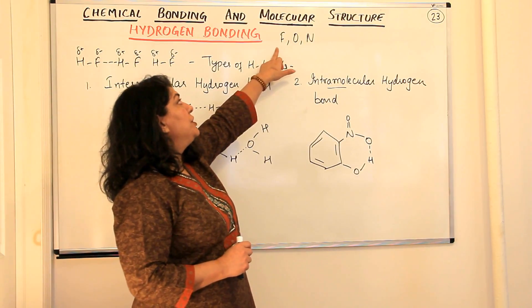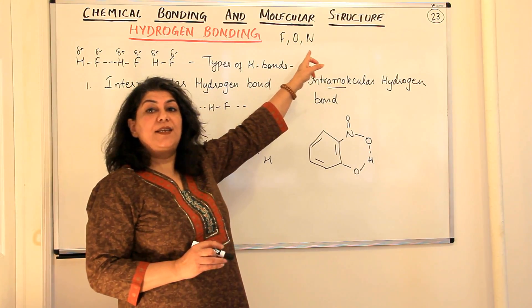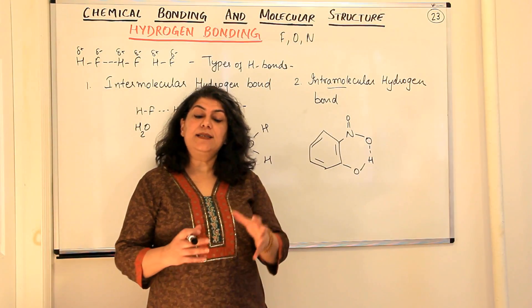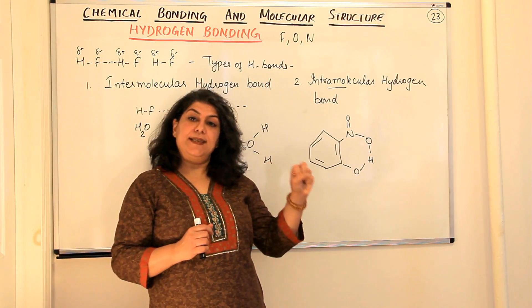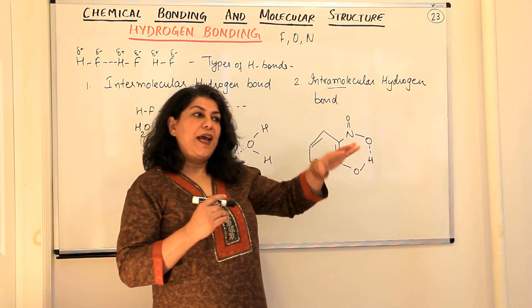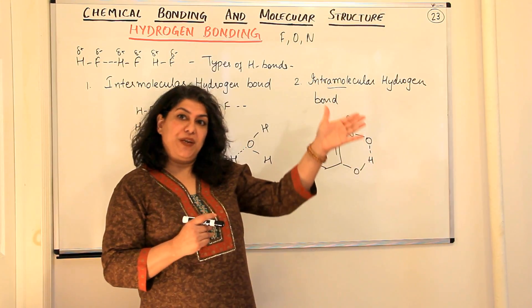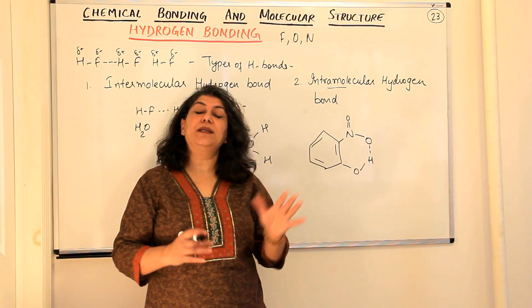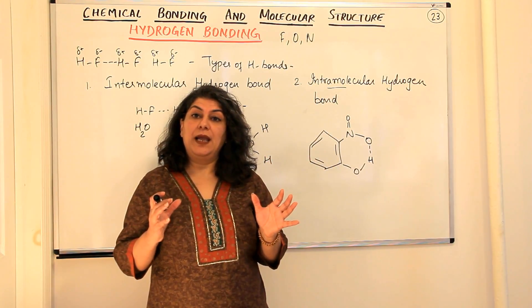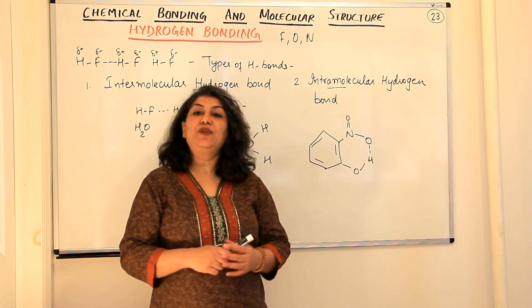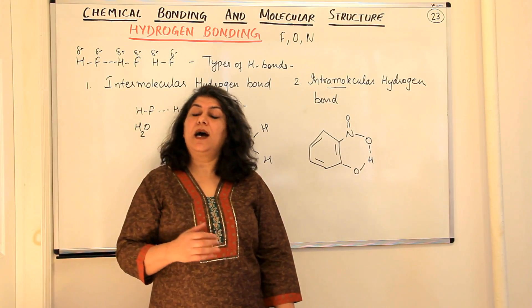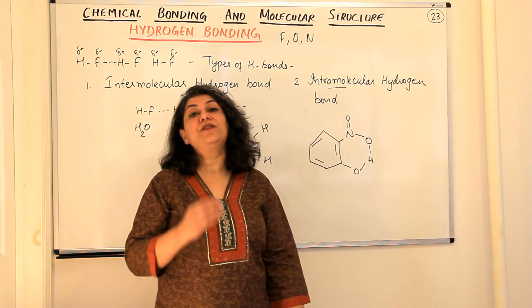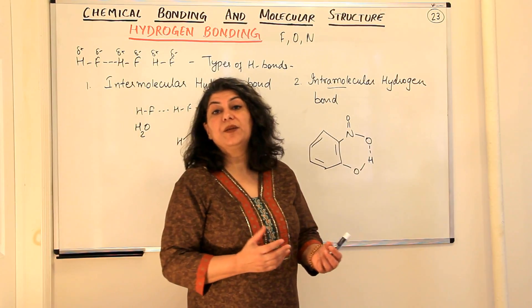Fluorine is in the 17th group, oxygen is in the 16th group, and nitrogen is in the 15th group. These elements are the smallest in size in the period and also in the group. So they are the most electronegative elements in the periodic table, and on the other hand, out of the non-metals, hydrogen is the most electropositive non-metal in the periodic table.